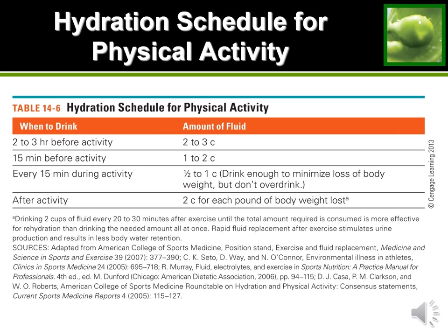For example, if you weigh 130 pounds before exercise and 128 pounds after, you lost two pounds of fluid. For each pound, drink two cups of water — so that person needs a total of four cups of water to replenish their fluids.